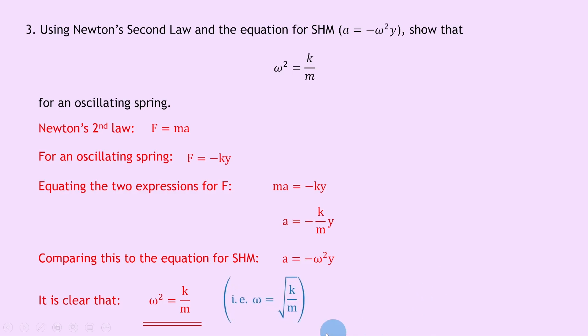And that means if you wanted to calculate angular frequency omega, then you would need to do the square root of k over m, i.e. the spring constant divided by the mass.